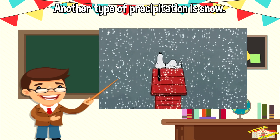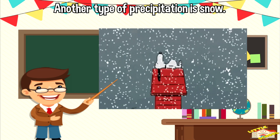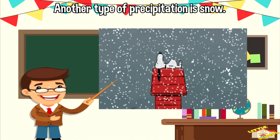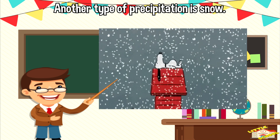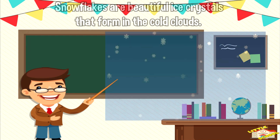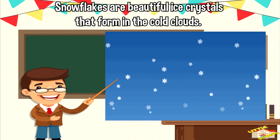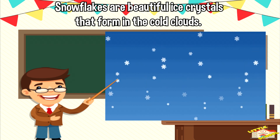Another type of precipitation is snow. Snowflakes are beautiful ice crystals that form in the cold clouds.